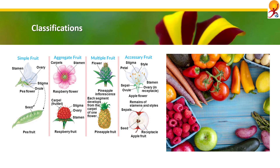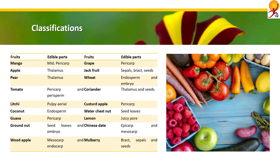I suggest taking a screenshot of this table for future reference. The table contains the edible parts of different fruits — for example, mango's edible part is mesocarp, apple is thalamus, tomato is berry (pericarp and berry sperm), lychee is pulp/aril, etc. Please do take a screenshot of this for future use, as it is very important.